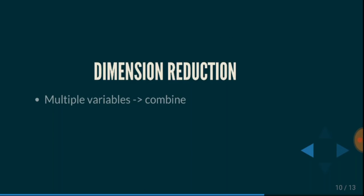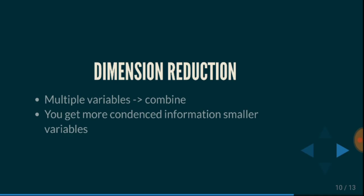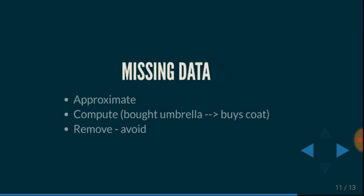The next term is dimension reduction. Dimension reduction means you have multiple variables and you combine them into a condensed, smaller set of variables. All these steps — focusing on features, grouping them, and reducing dimensions — are meant to make an algorithm run faster, smoother, and more correctly. We can't solve the whole world; we solve a focused subset of it.